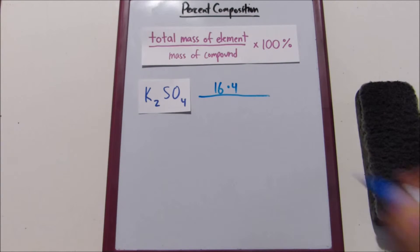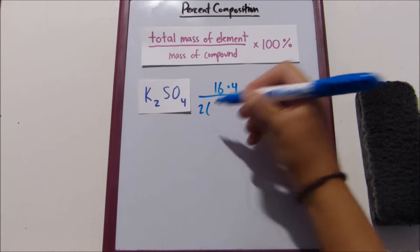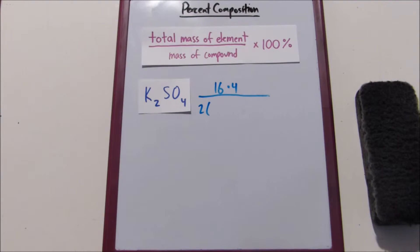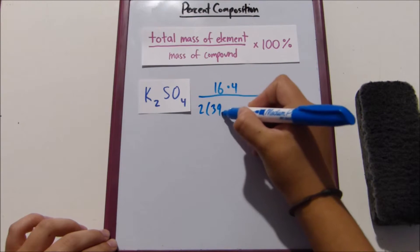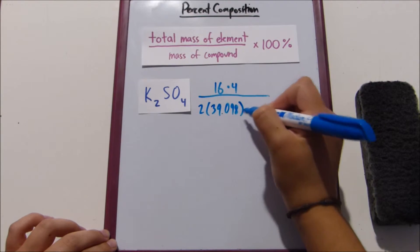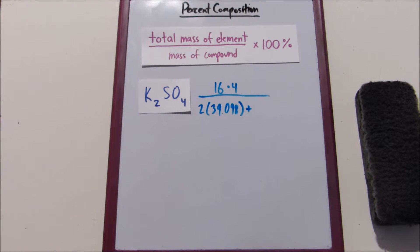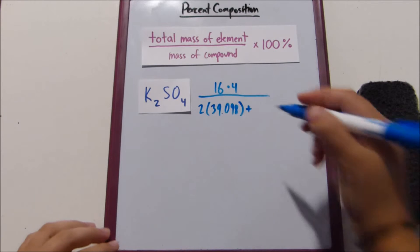Then our denominator. We're going to have two atoms of potassium. So we go to potassium. Potassium is about 39.098. Then we add on the mass of our sulfur, which is about 32.066.